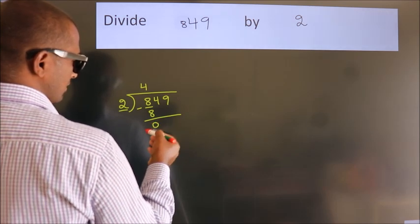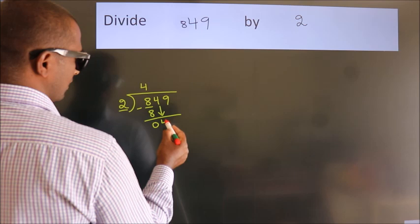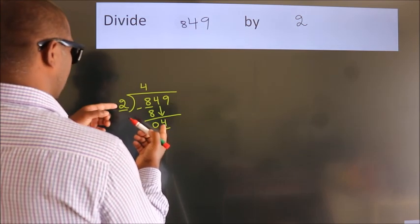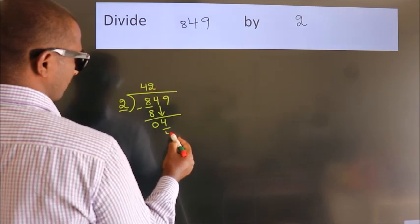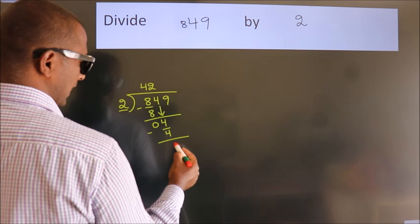After this, bring down the beside number, so 4 down. When do we get 4 in the 2 table? 2 2s 4. Now we subtract, we get 0.